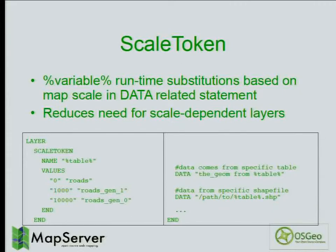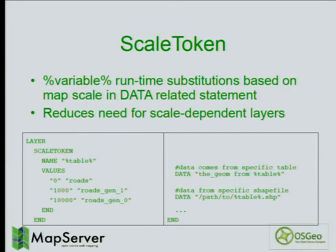Scale token is useful when, as you zoom in, you're showing more or fewer features and previously needed several layers with nearly identical definitions differing only in the data statement. Now you can add a scale token keyword, specify your variable passed in the URL, and define which value that variable should take for each scale range. In your data statement, you reference that variable, and it gets set based on the map's current scale.